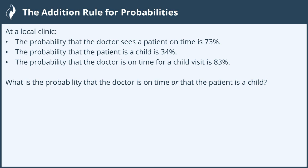So at a local clinic, the probability that the doctor sees a patient on time is 73%. I'm going to just write some things down as I read. So probability that he sees a patient on time is 73%, I'm going to put that as 0.73.